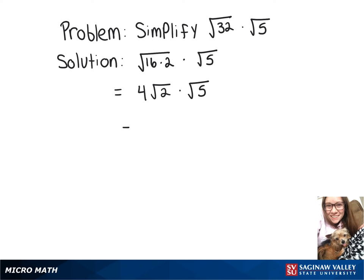Now we can multiply what's inside our square roots, which gives us our final answer of 4 root 10.